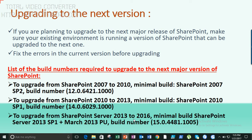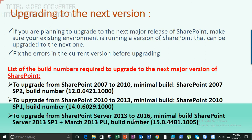Build numbers required to upgrade: from 2007 to 2010, from 2010 to 2013, and from 2013 to 2016 you should be running Service Pack 1 with the March 2013 CU. The overall upgrade process involves planning and auditing the environment, architecting, building and testing the new environment, running the upgrade, testing again, exposing to end users, and finally decommissioning the old environment.